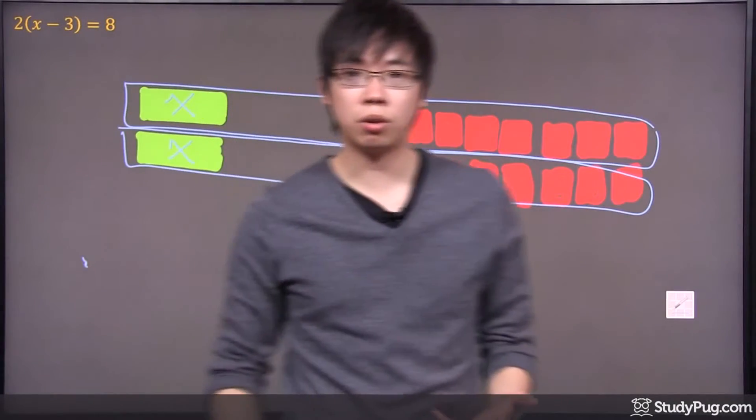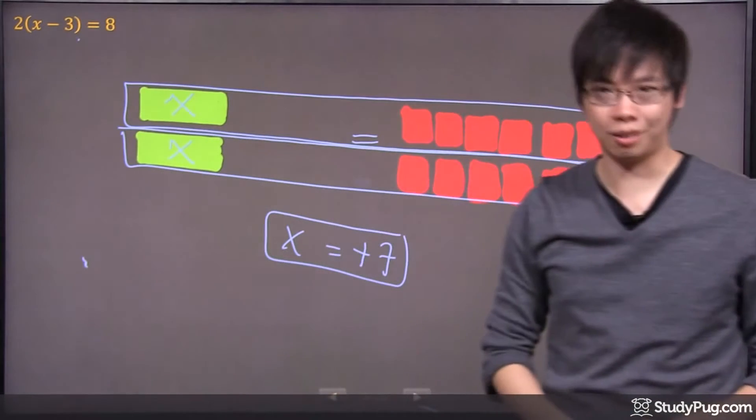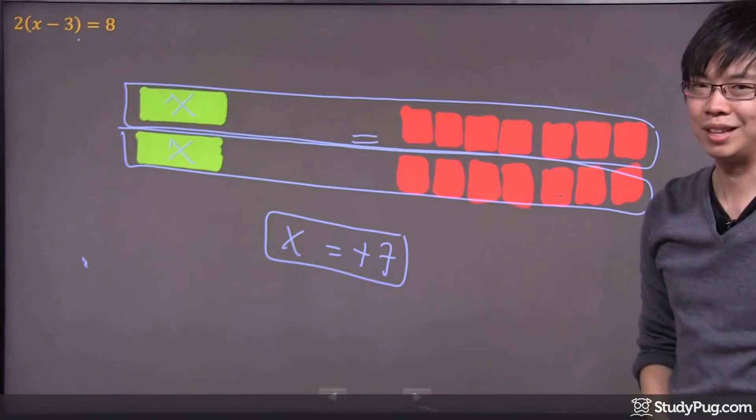So, x equals seven. If you're not quite sure, plug it back into the equation. Seven minus three is four. Four times two is eight. You get the same answer to the left and the right. This is your answer for this question. Thanks so much.